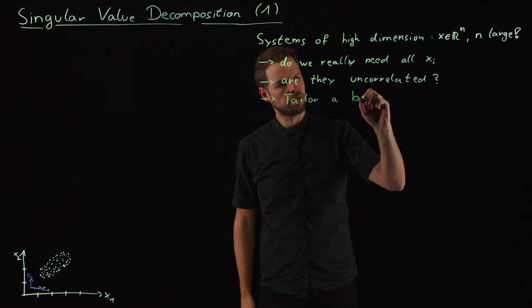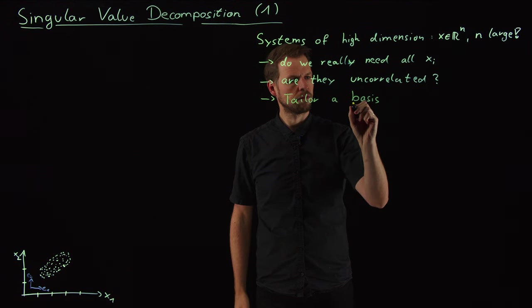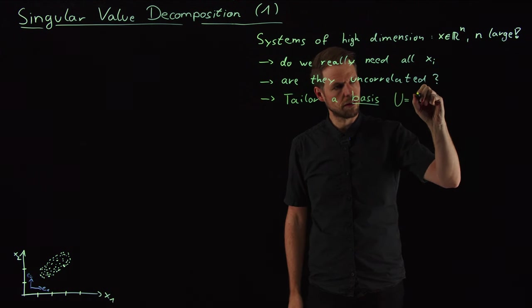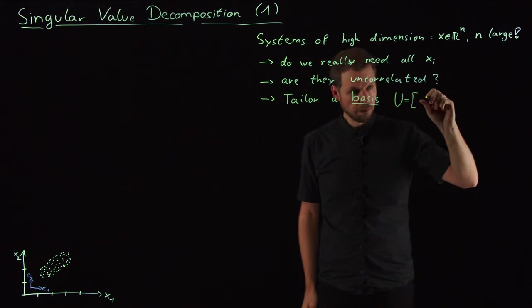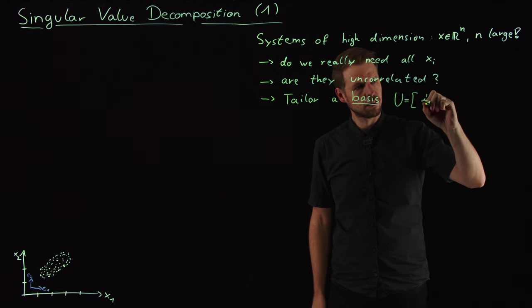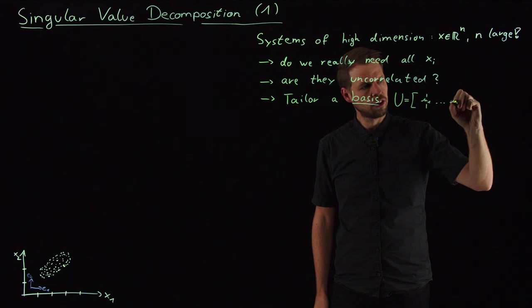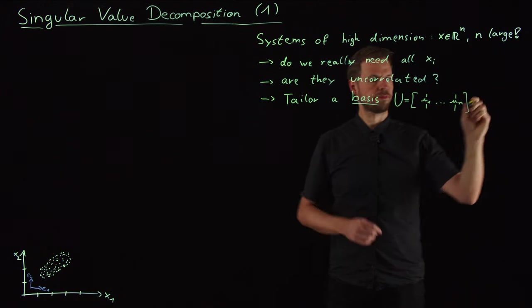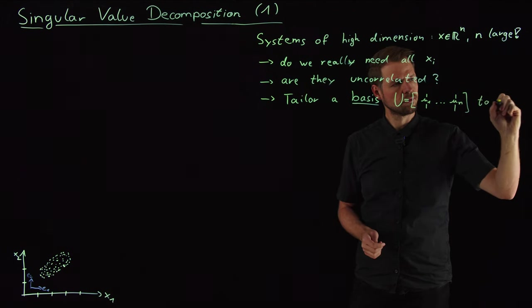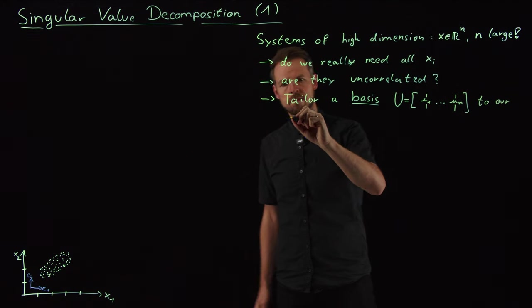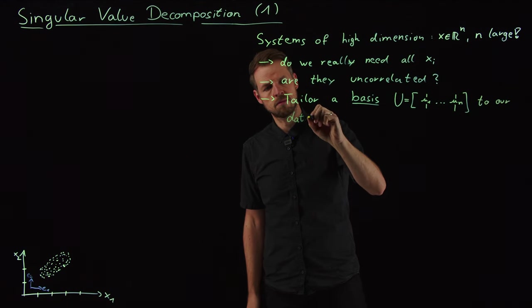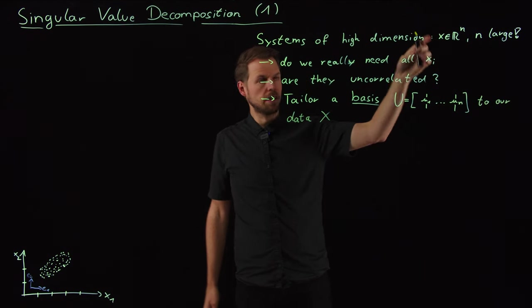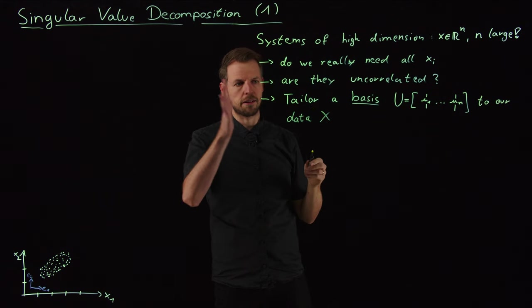And so my goal is going to be to tailor a basis. And I'm going to call this u, so it's a bunch of vectors, u1 to un to our data. So this is a data matrix X, which has column-wise these snapshots.